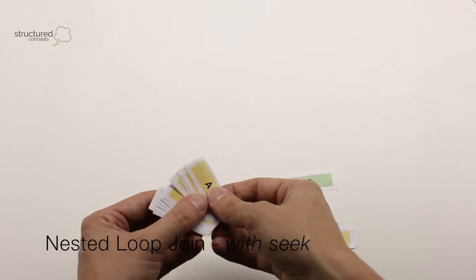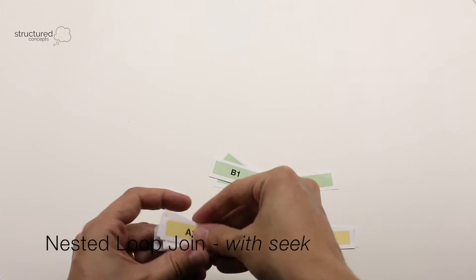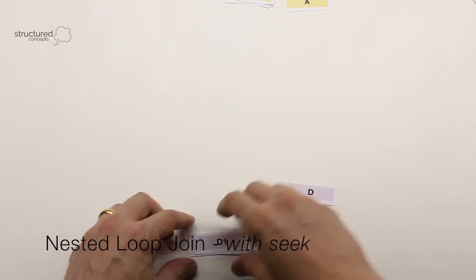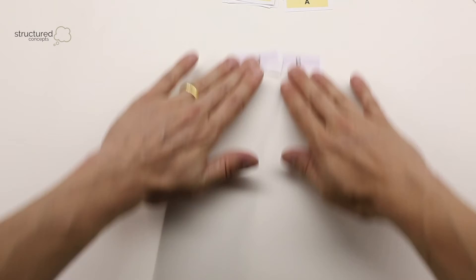The good news with nested loop joins is that they don't build hash tables, so they don't need any memory to work. And that could very well offset the performance penalty from scanning the probe input over and over.